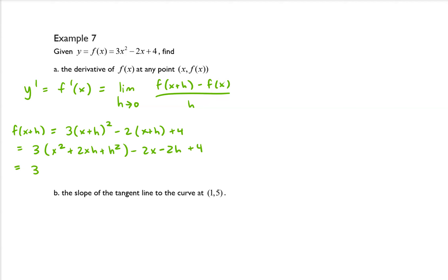I'm going to distribute that 3 in now, so we have 3x squared plus 6xh plus 3h squared minus 2x minus 2h plus 4.